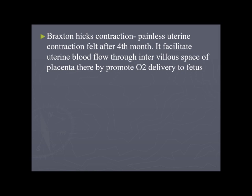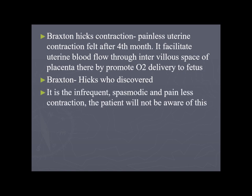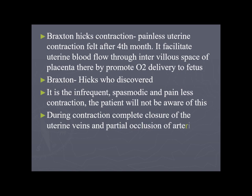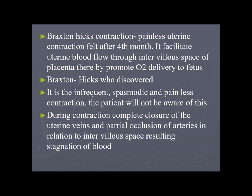Braxton Hicks contractions are painless uterine contractions felt after the fourth month. They facilitate uterine blood flow through the intervillous space of the placenta, promoting oxygen delivery to the fetus. These contractions are infrequent, spasmodic, and painless — the patient is often unaware of them. During contraction, there is complete closure of uterine veins and partial occlusion of arteries, resulting in stagnation of blood.